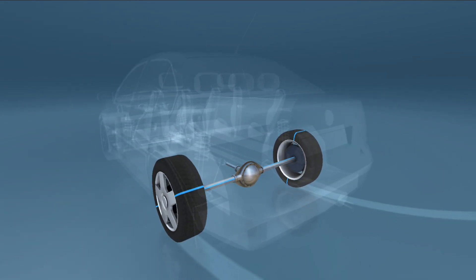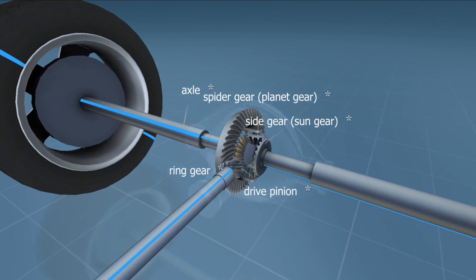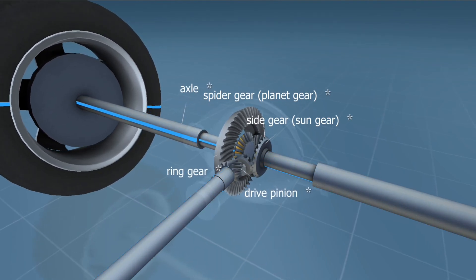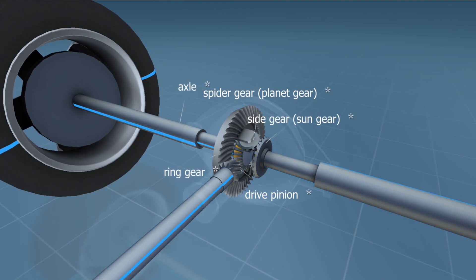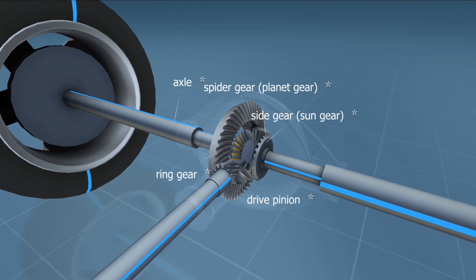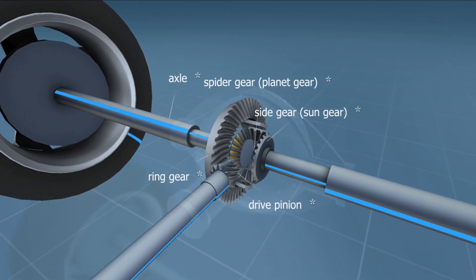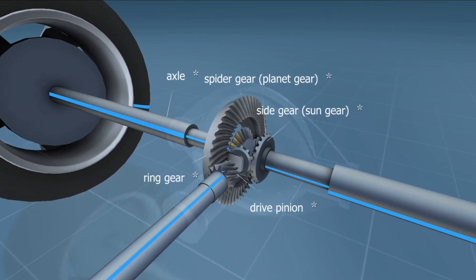This is called a differential. The differential is a type of planetary gear train. It divides power between the wheels in such a way that the wheels can rotate at different speeds depending on the turning curve, but the average of their rotational speed equals the rotational speed of the drive shaft.